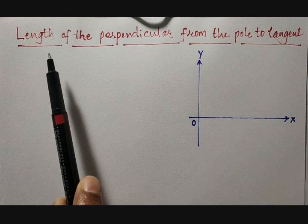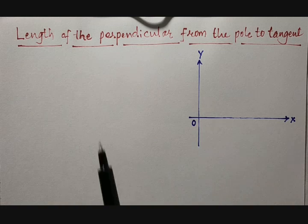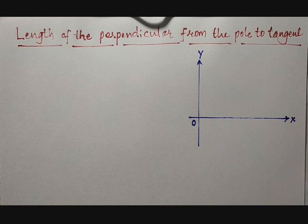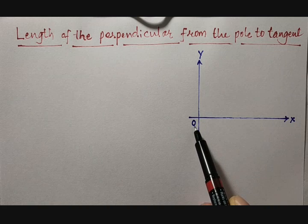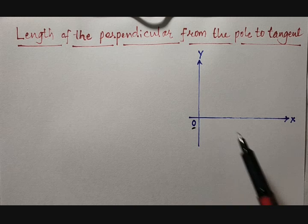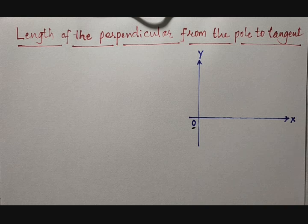The length of the perpendicular means 90 degrees. From pole to the tangent means: this is a pole — O is the origin, which is nothing but a pole. From here, to the tangent, we are going to draw one perpendicular line, and the length of that line is going to be calculated.